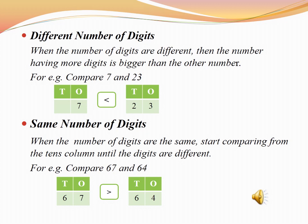And when the number of digits are the same, start comparing from the tens column. As you know, we write numbers in tens and ones places. So when there are two digits in both numbers, we will start comparing the digits from the tens place.